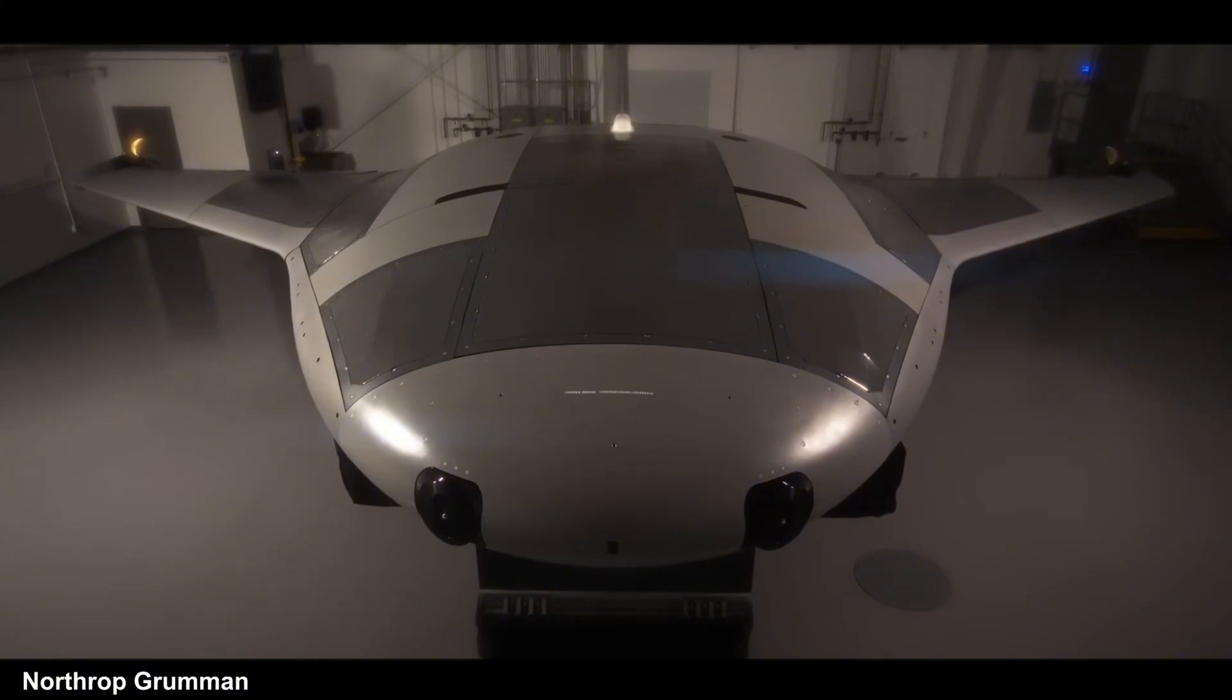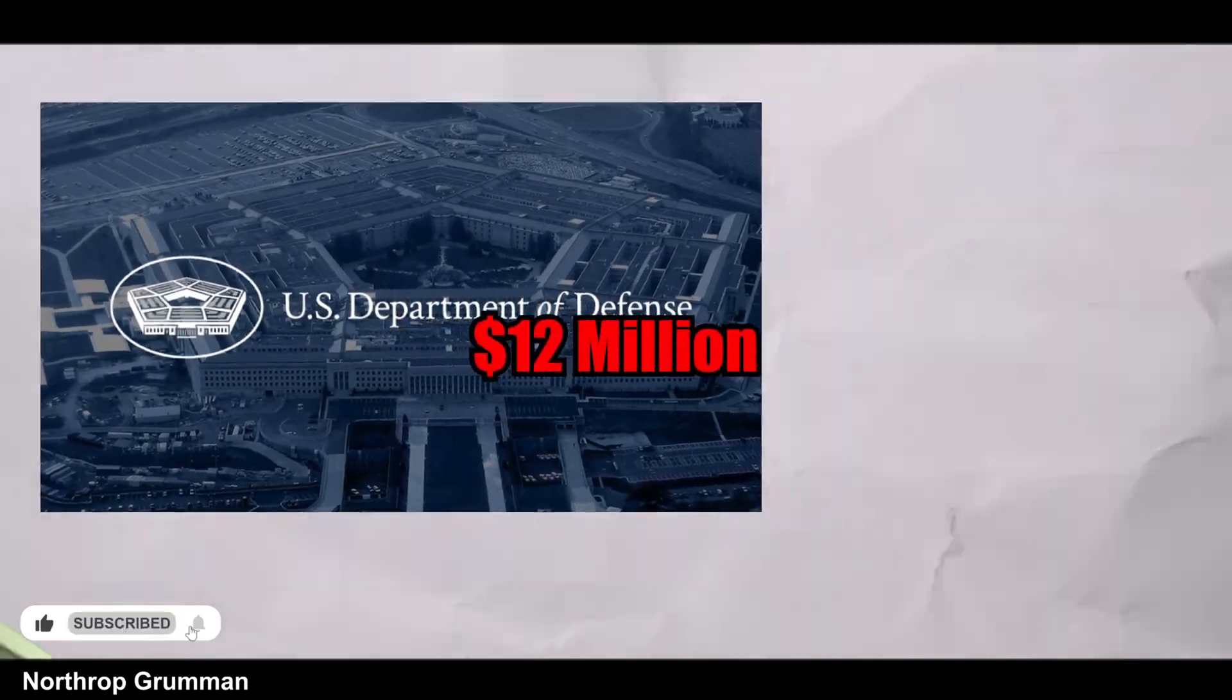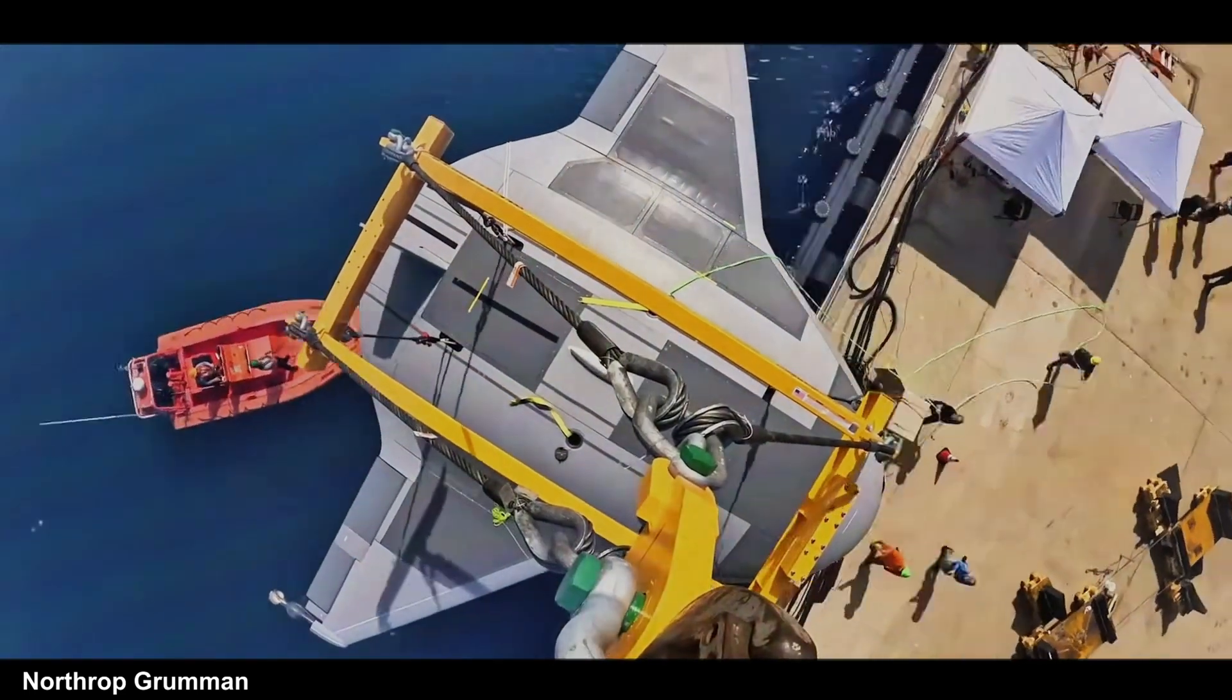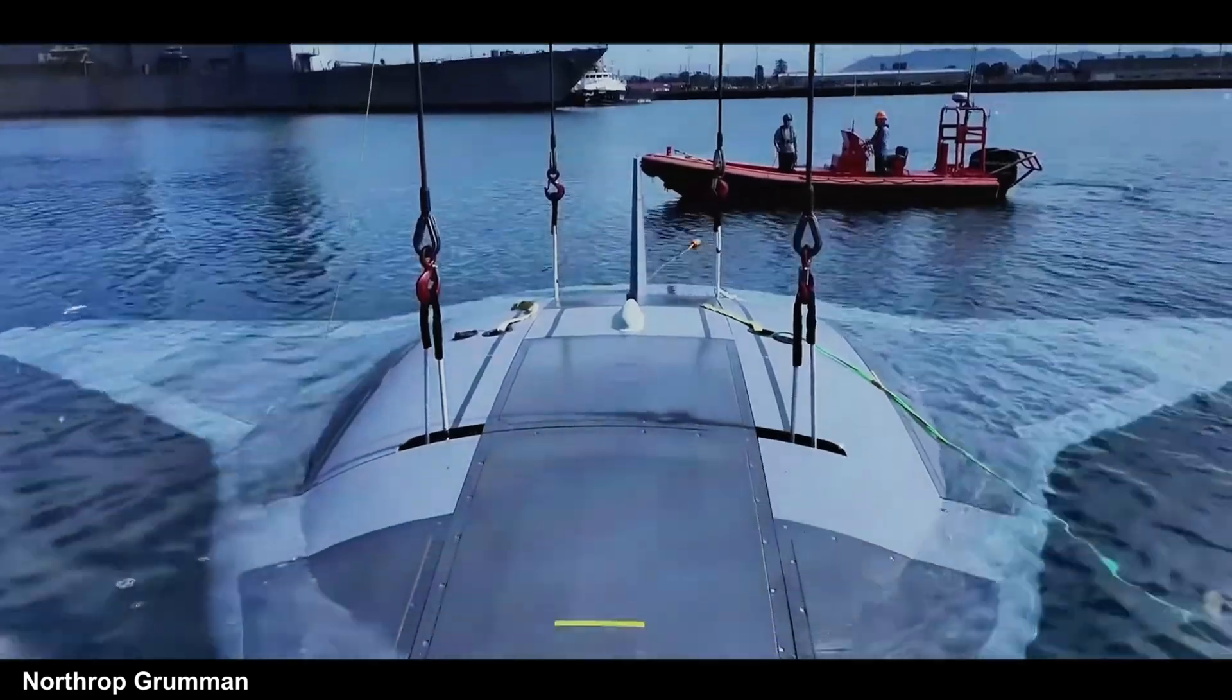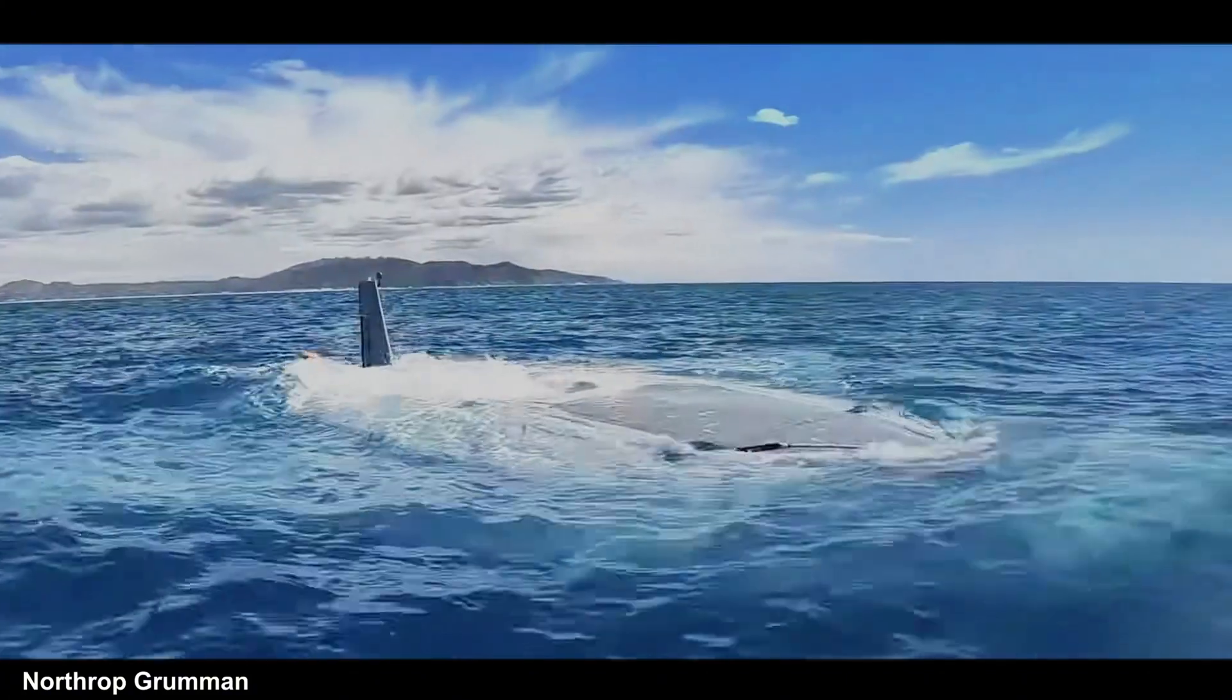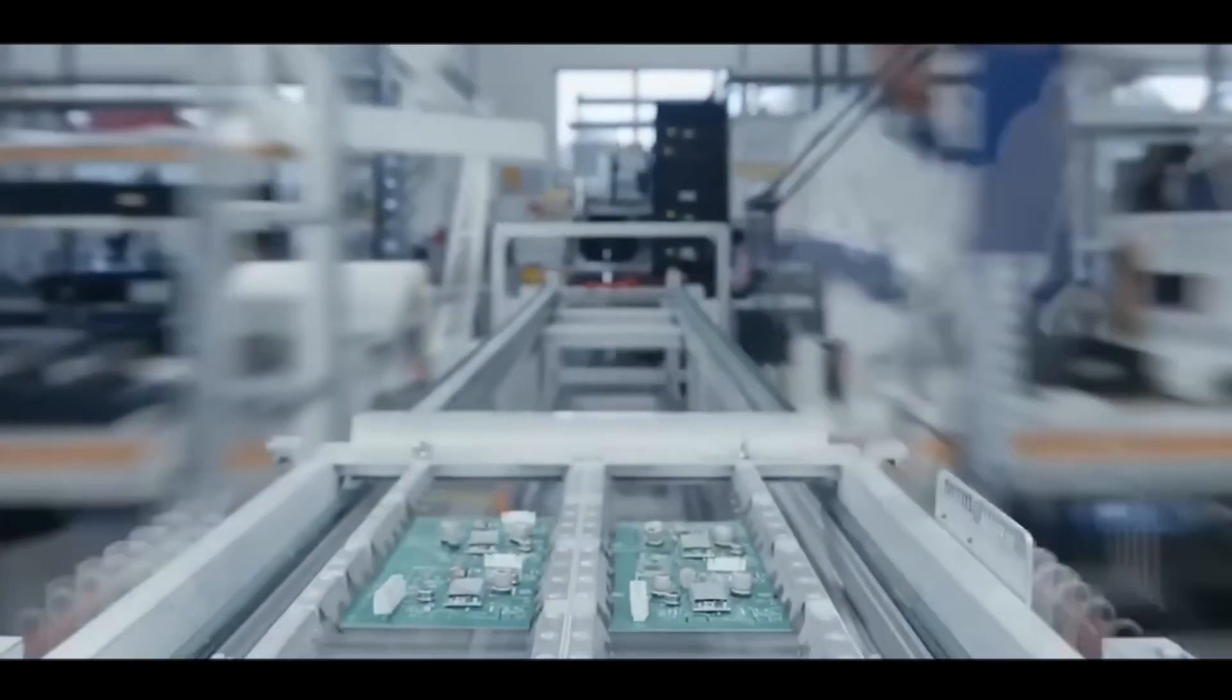The origins of the manta ray project trace back to February 2020, when the U.S. Department of Defense announced a $12 million investment in DARPA to develop an unmanned underwater vehicle (UUV). While initial details about the project were limited, the overarching goal was clear: to create a submarine drone with high operational autonomy and advanced reconnaissance capabilities. This vision underscored the growing emphasis on unmanned systems in modern military operations, particularly in the underwater domain.